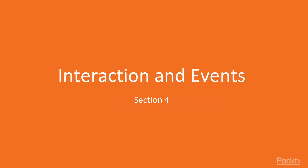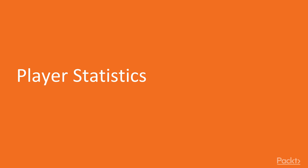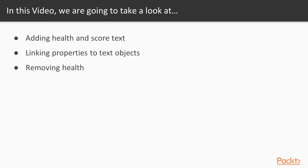Welcome back to Section 4: Interaction and Events. Within this section, we will learn about player statistics, adding laser beams including linked events, and then finally adding laser guns with shooting mechanics. In this video, we will be going over adding player statistics to our game. We will learn how to add both health and score text, how to link properties to the text objects, and how to remove health when the player gets hit by an asteroid.